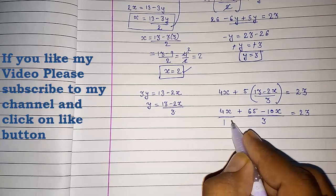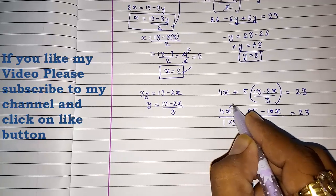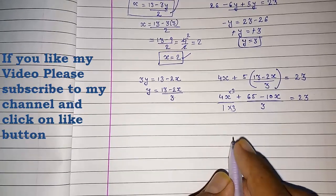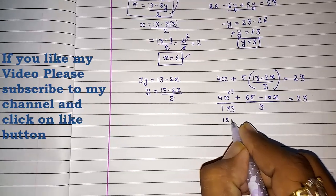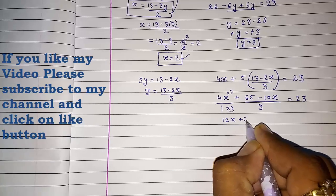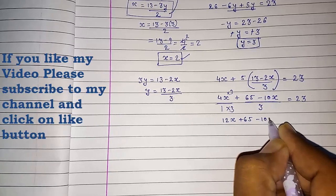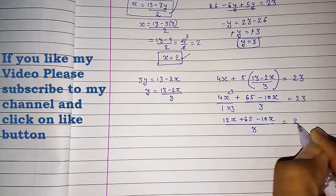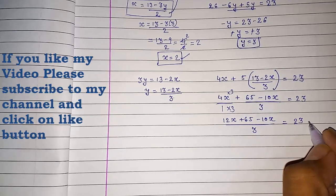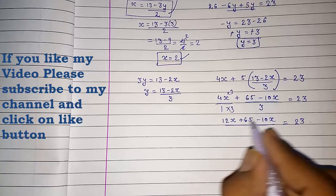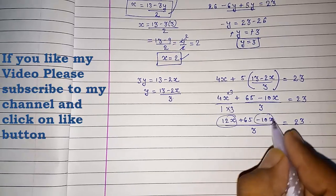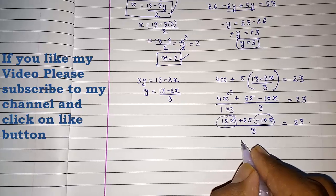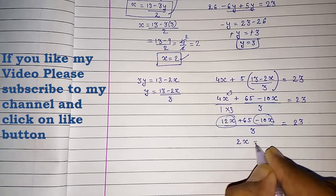Now here we have to make this denominator 3 for the whole expression. Our equation will become (12x + 65 - 10x) / 3 = 23. Now you can take this 3 to the other side.